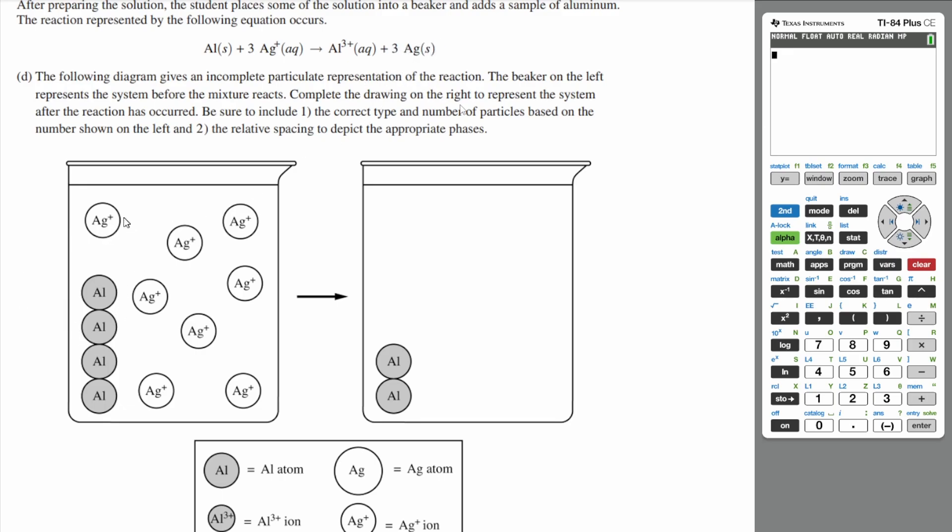All right, so we know that one aluminum solid reacts with three silver ions to produce one aluminum ion and three silver solid atoms. So we have how many? We have one, two, three, four, five, six, seven, eight. We have eight silver ions, which means this reaction can occur two times. If you notice, the aluminum solid is our excess reagent. Your silver is what's going to determine how many times this reaction runs. And since you have eight of them, this reaction is going to run two times, which means you lose two of these aluminum atoms, but you gain two of these aluminum 3+ ions and you're going to gain six of these solid.